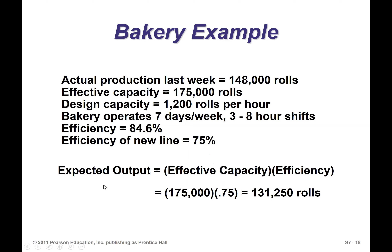We also worked out expected output. The equation is: expected output = effective capacity × efficiency. If the effective capacity is 175,000 and the efficiency of a new line is 75%, bring the efficiency back to a decimal: expected output = 175,000 × 0.75 = 131,250 rolls.